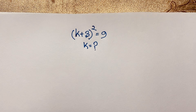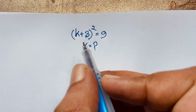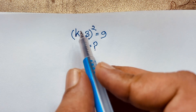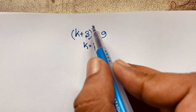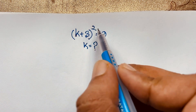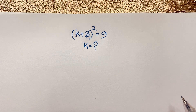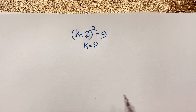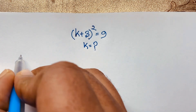Hello everyone, welcome to Russia's classroom. Today we are solving a nice algebra problem: (k + 3)² = 9. What is k? I will solve this question using two or three methods. Our first method: